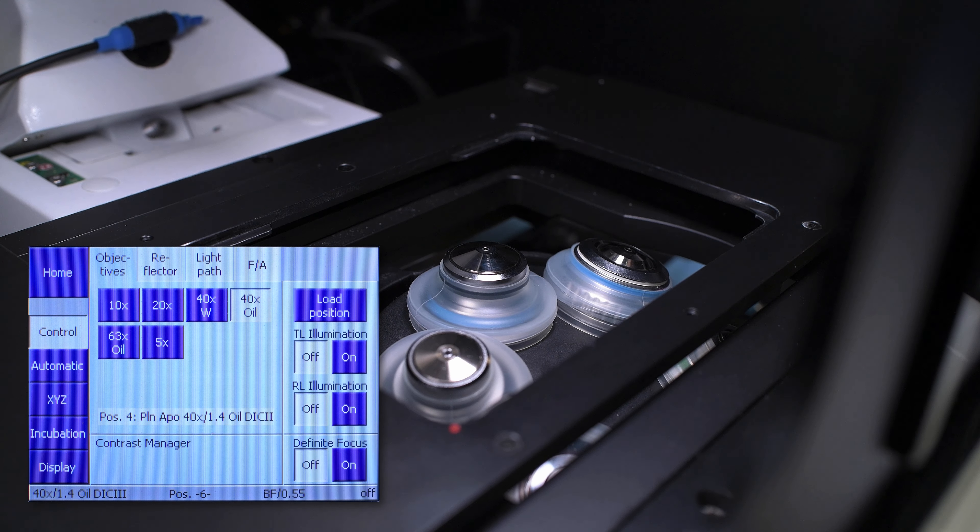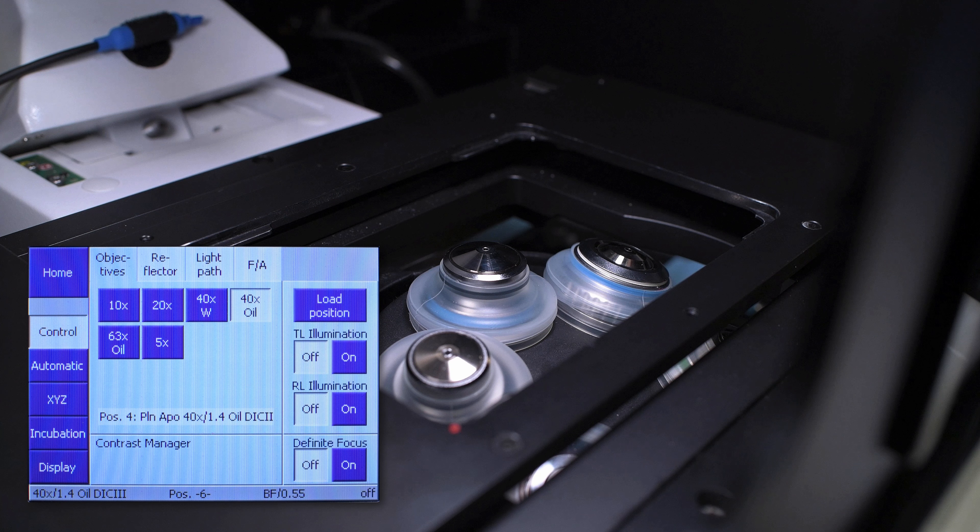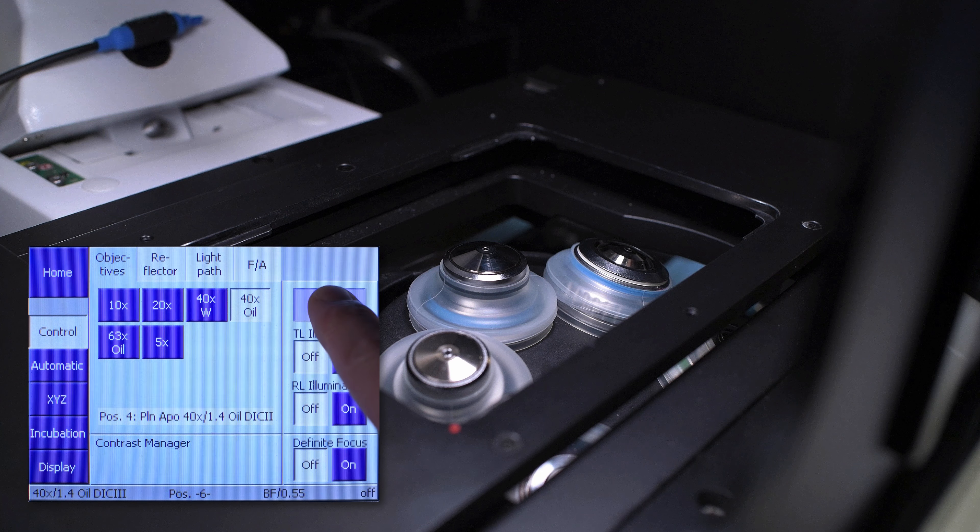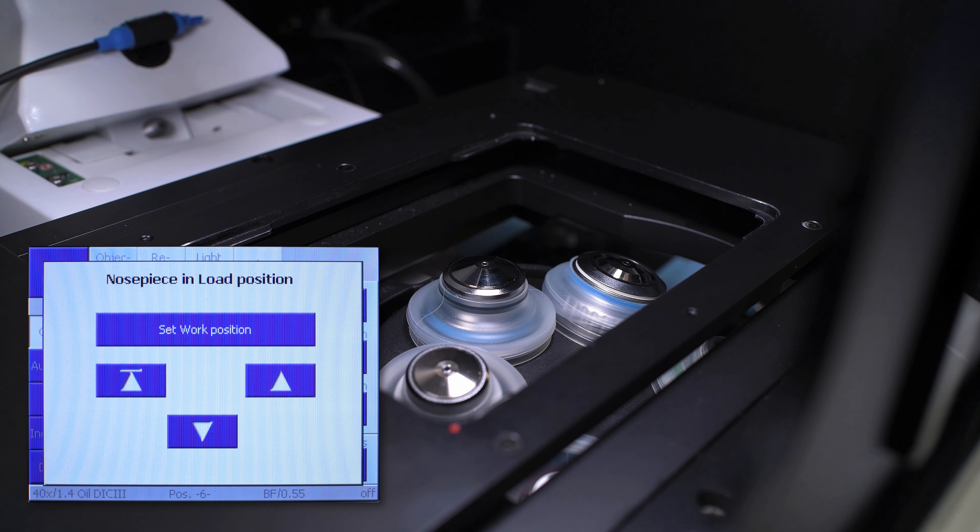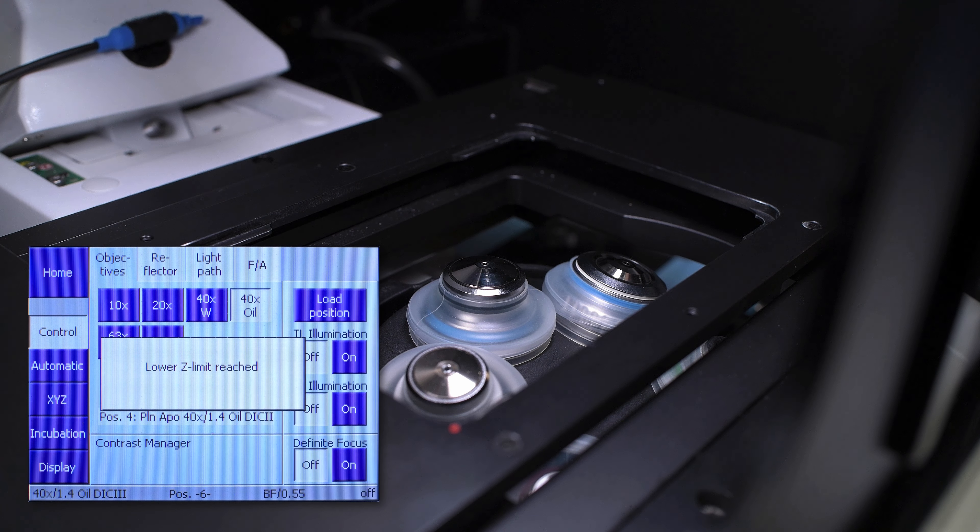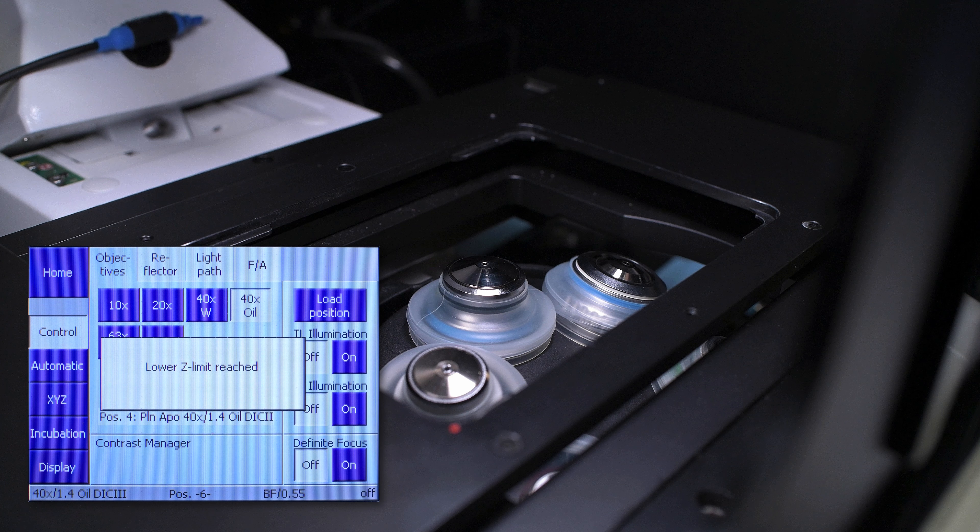If the objective moves its focus back up toward the specimen plane, we will need to adjust it. From the right side of the TFT display, click load position to move the objective to the lower limit of the focus drive. Then click set work position. This is the safest place for the objective while we mount our sample.